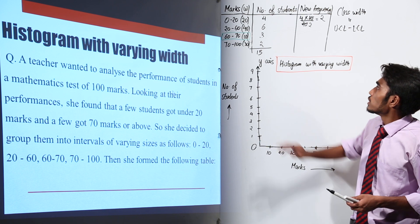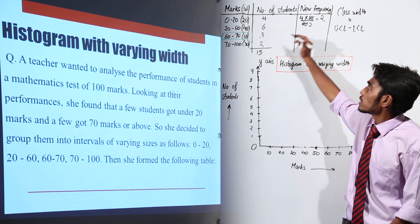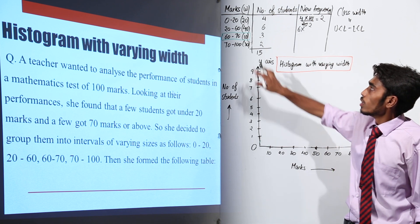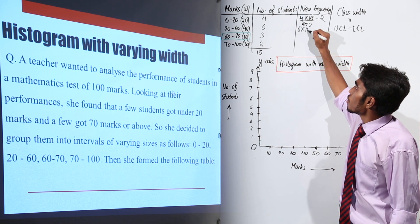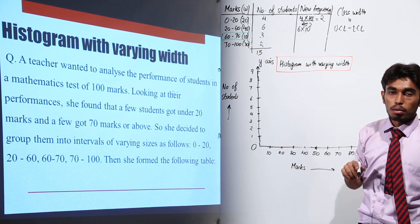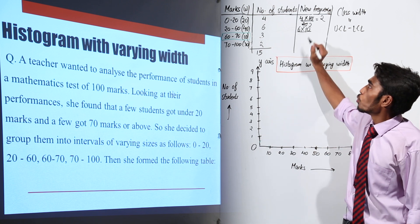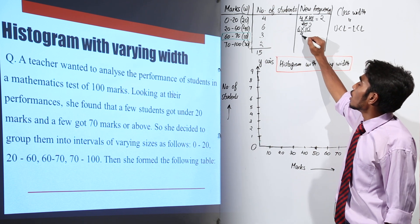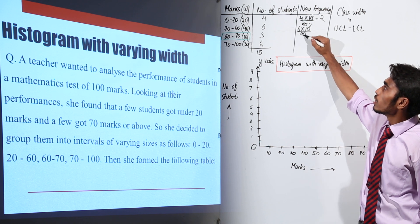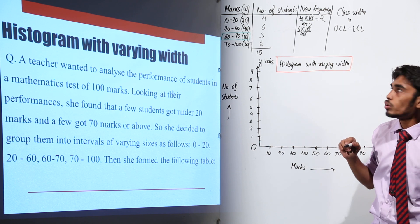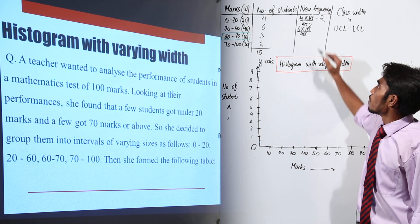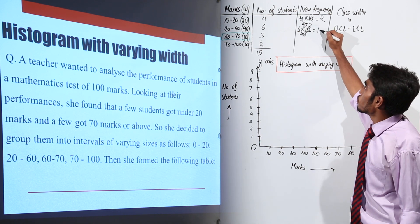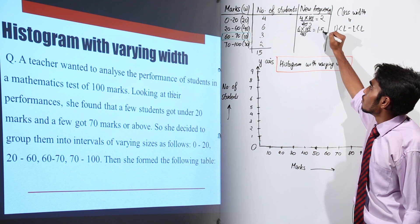Similarly, for the second class interval, we have 6 as the frequency. So 6 into 10, which is the minimum class width, and divided by its own class width that is 40. So 6 into 10 by 40 — the zeros get cancelled out — and we have 6 by 4, which is nothing but 3 by 2, that is 1.5.